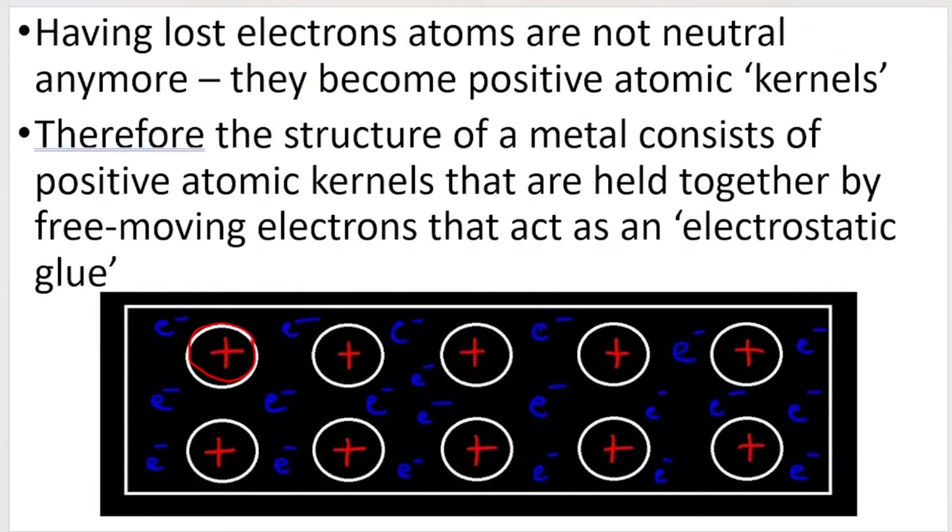And what happens is because these atoms have lost their electrons, the atoms are not neutral anymore. So think about it. If you lose something that is negative, you lose negative things, you become positive. So these atoms become positive atomic kernels. Kernels are just a word that they give the leftover part, the positive part. So this is what happens.